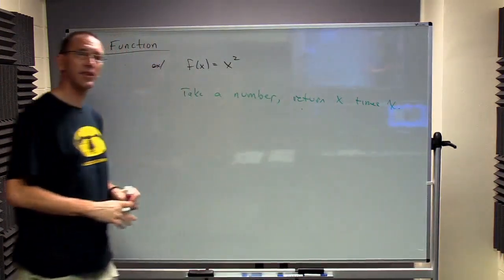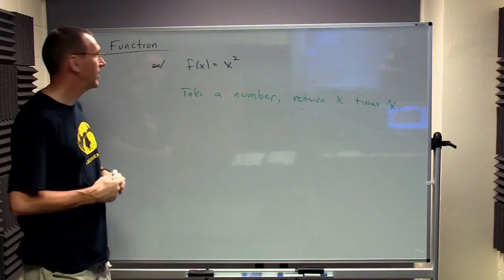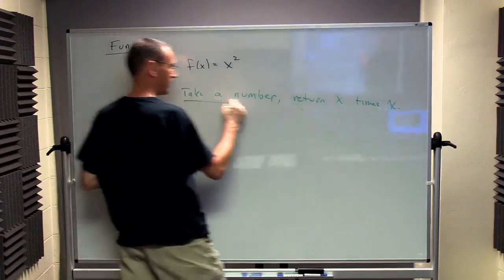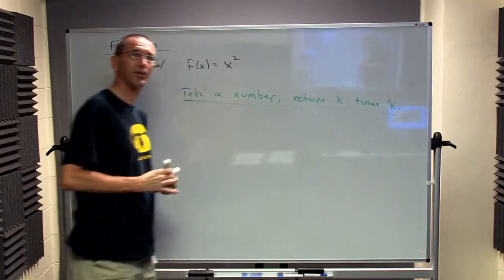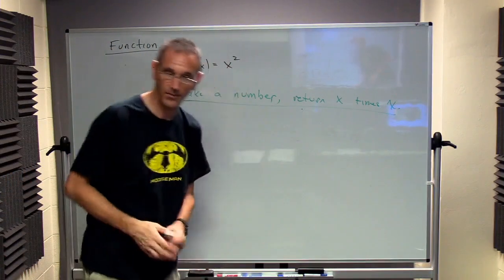And we're going to take x times x, and that's the number we get out. So that's the rule that we're given here. And this is the algebraic expression, and this is the written description for that same rule. So both of these things mean the same thing.